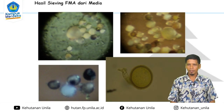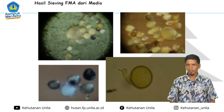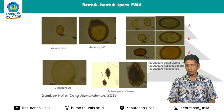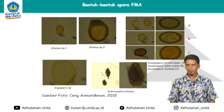Ini hasil saringan spora FMA dari media tanah. Bisa kita lihat berbagai macam jenis spora yang ditemukan: ada Gigaspora, Glomus sp., Sclerospora, Aclospora, dan banyak jenis lainnya. Ukuran sporanya berbeda-beda, sekitar 30 mikron. Glomus pun juga banyak jenisnya berdasarkan ukuran, bentuk, dan warna kalau diamati secara morfologi di laboratorium. Ada juga Sclerospora scrobiculata, Sclerospora tuberculata, Sclerospora copiata, Gigaspora yang ukurannya lebih besar, dan Sclerospora sinuosa.